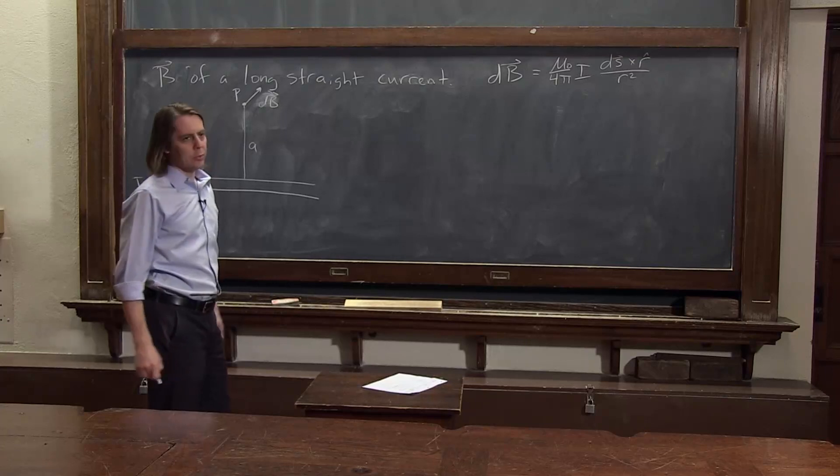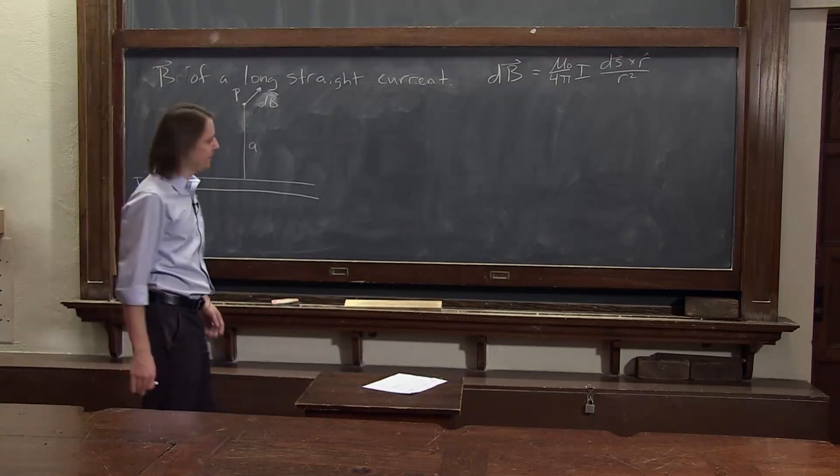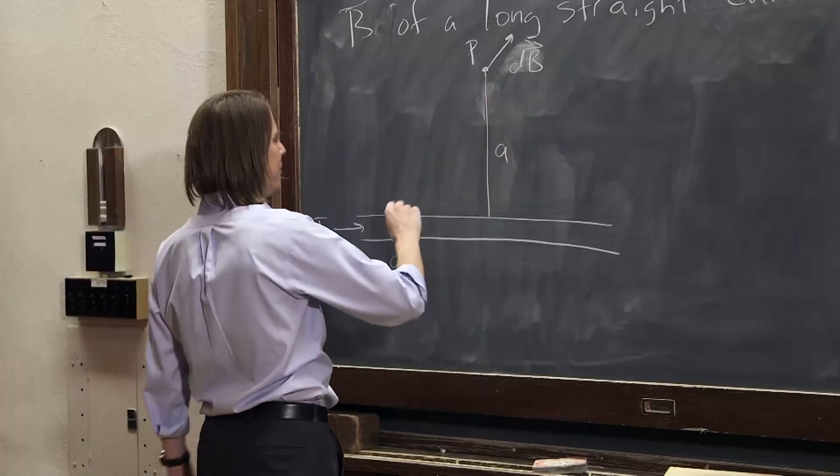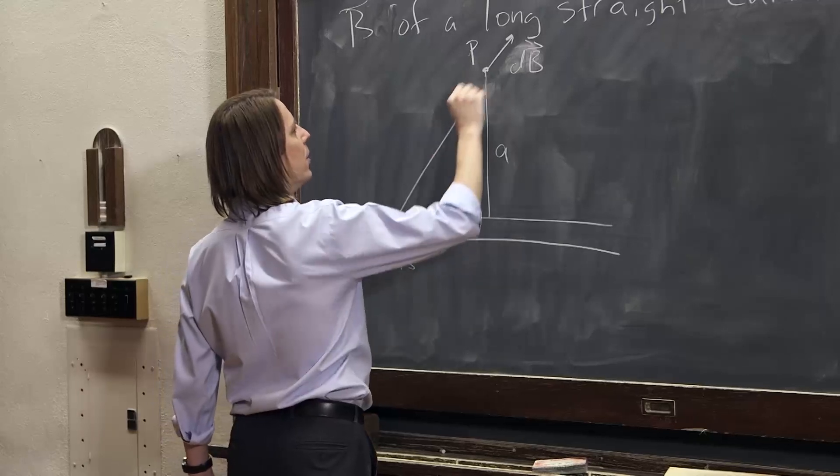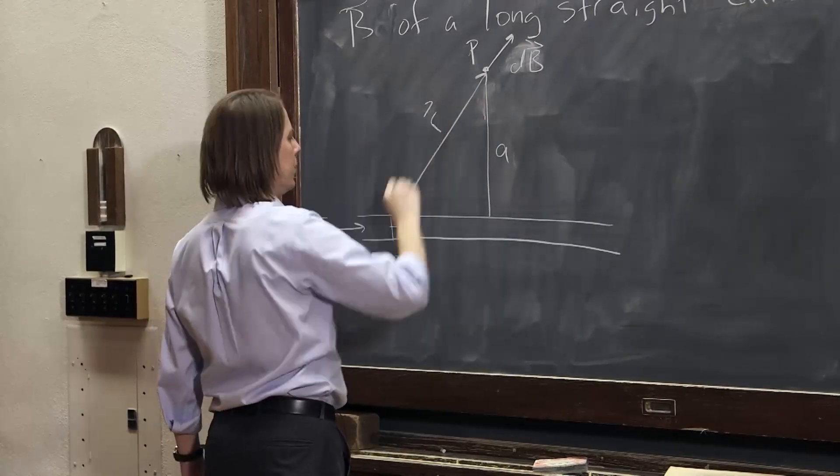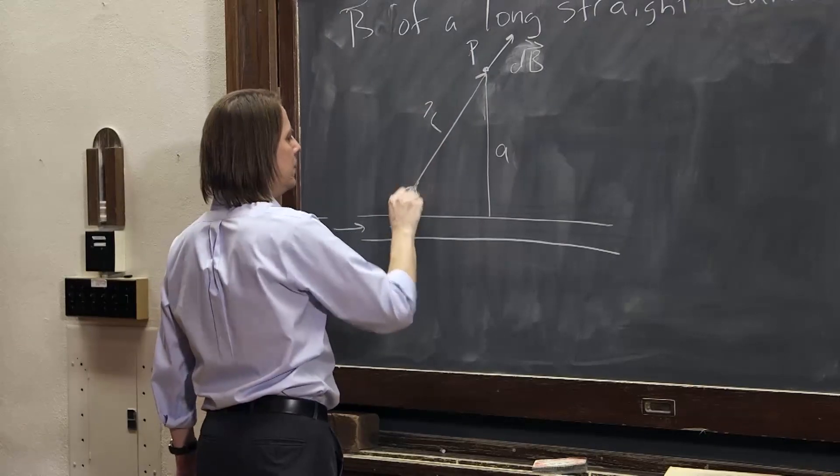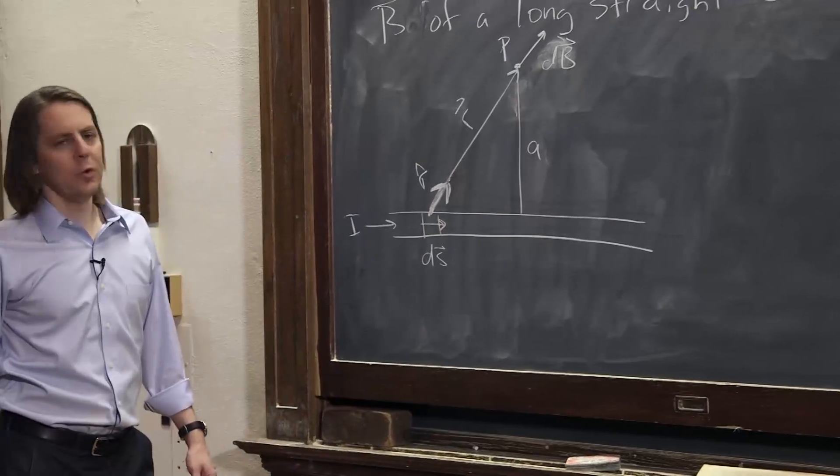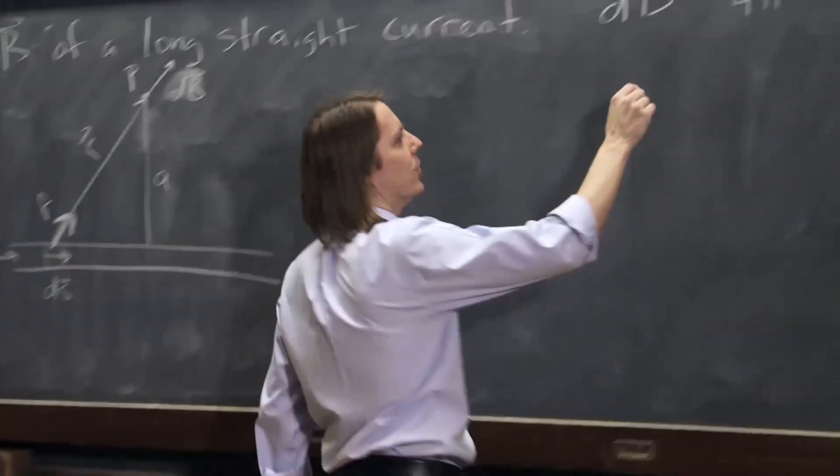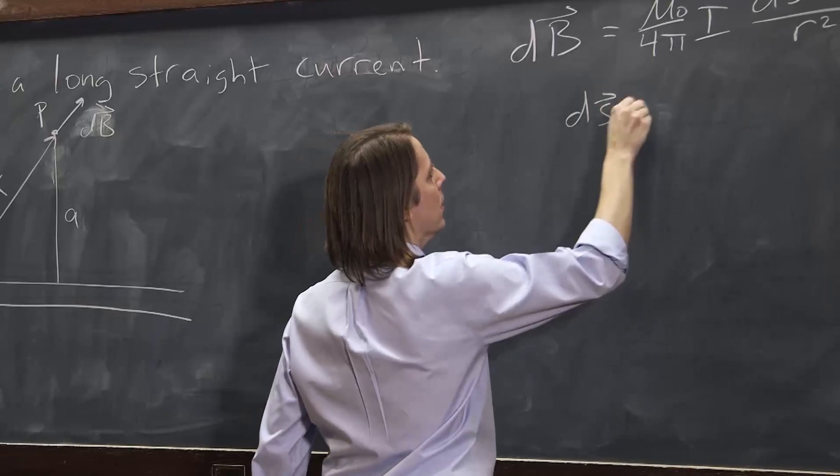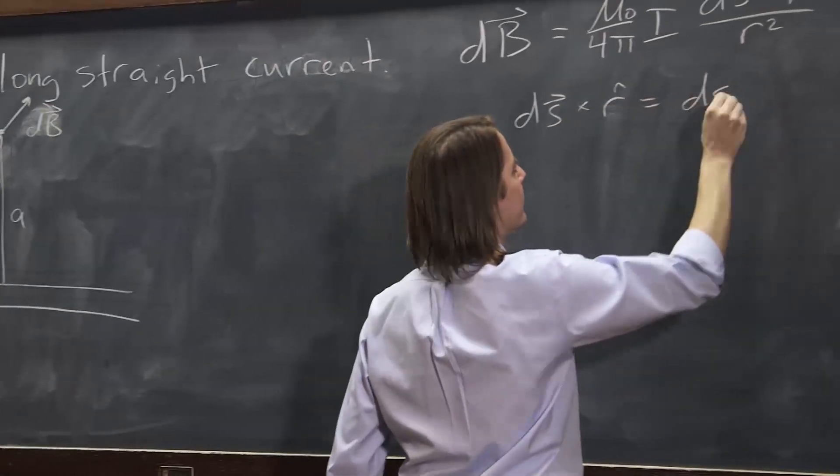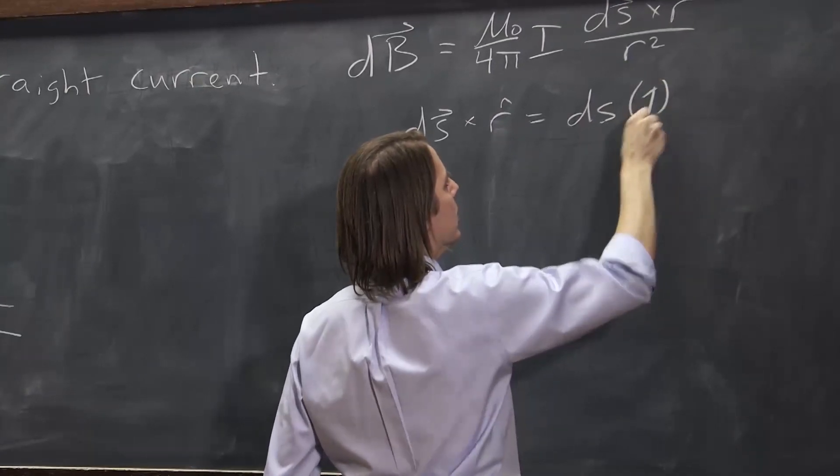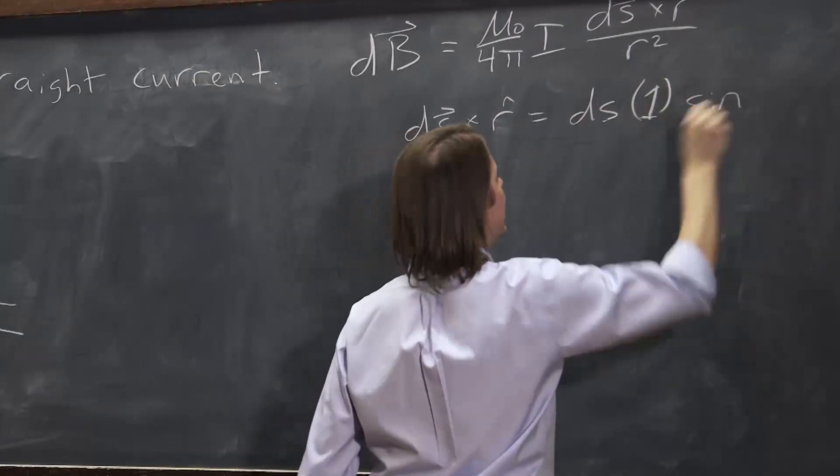So now we've got to deal with ds cross r̂. What in the heck is that? Well, let's see. So here's the vector ds. The vector r̂, remember we think of a vector r from the ds to the point P. So there's r, so therefore that is r̂. So if you want that cross product, you say ds cross r̂ is the magnitude of one ds times the magnitude of the other, which is just 1, times the sine of the angle between them.